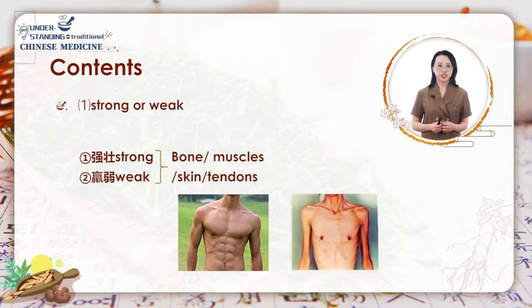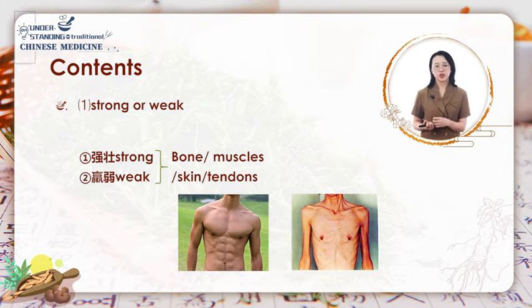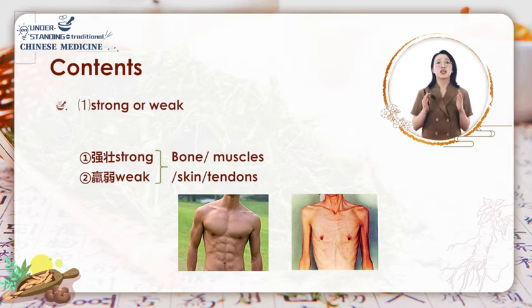Conversely, the weak physical is characterized by a sunken chest, weak muscles and tendons, and withered skin, which suggests low function of the zhangfu organs and effectively weak resistance against pathogenic invasions. However, we should clarify that strong or weak constitution should be considered together with the whole body situation and an integrative diagnosis.